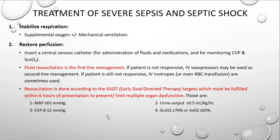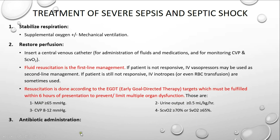Finally, we must achieve an ScvO2 of 70% or more, or an SvO2 of 65% or more. There is one more criterion which is the trending down of lactate, but it is not easily done at bedside. Not all of those criteria are necessarily measured in every patient; usually urine output and mean arterial pressure are the usual criteria to follow.